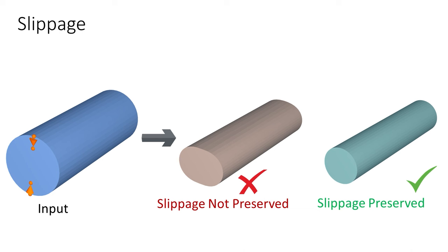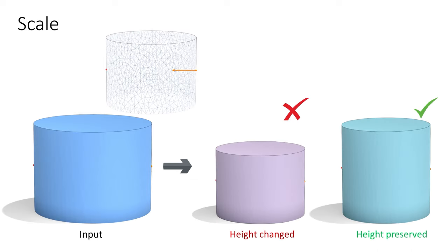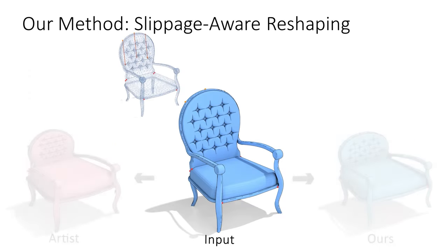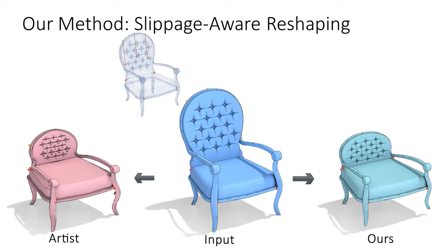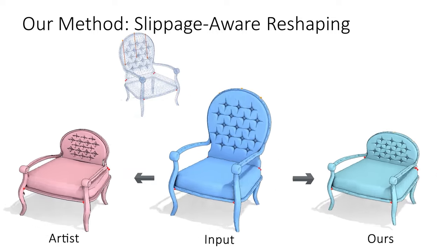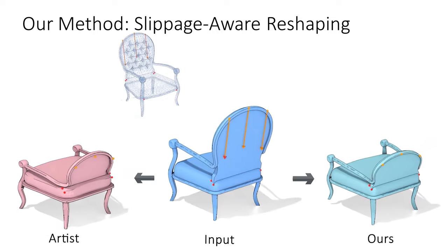Users expect slippable surfaces to remain slippable post-reshaping. For instance, given a cylinder which is slippable around its axis, they expect the reshaped output to retain this property. Subject to slippage preservation, users also prefer outputs that maximally retain the input dimensions. These observations form the basis for a slippage-preserving 3D reshaping framework.